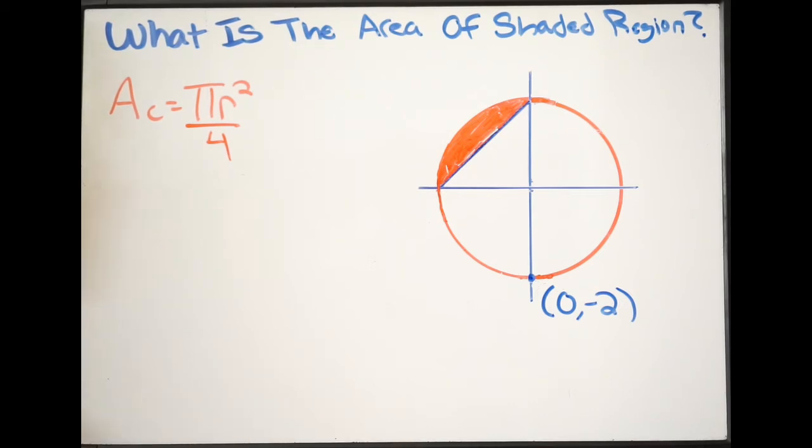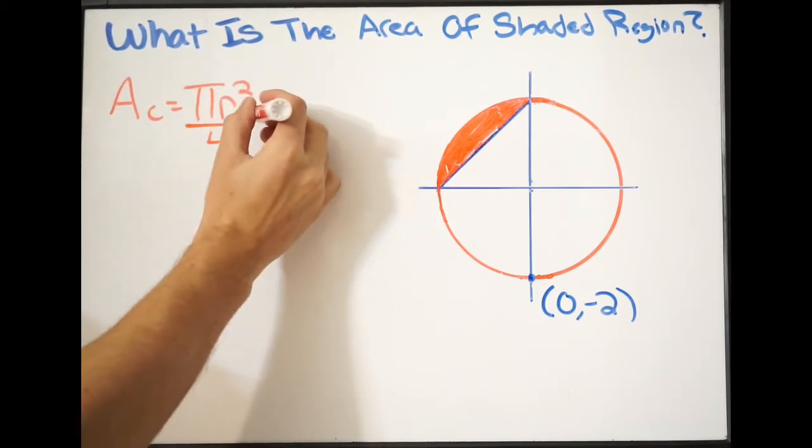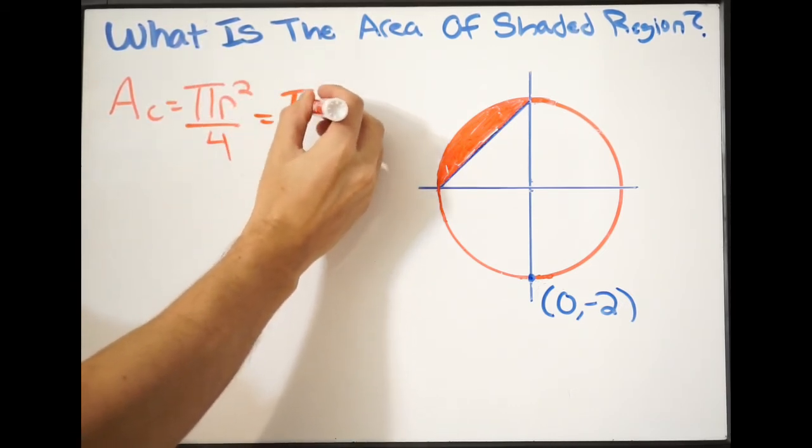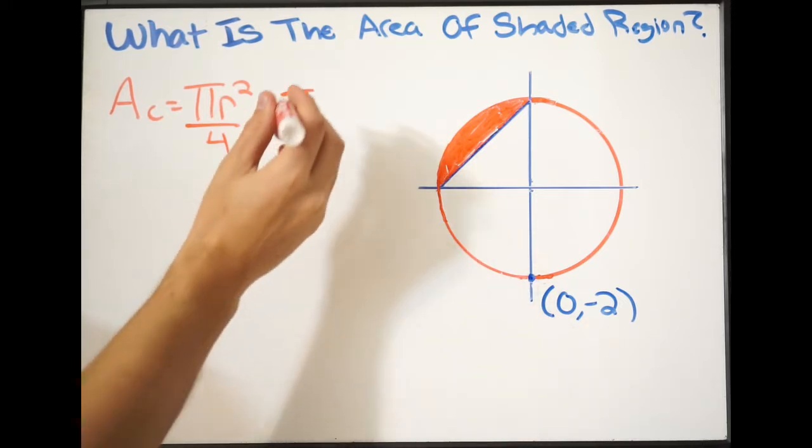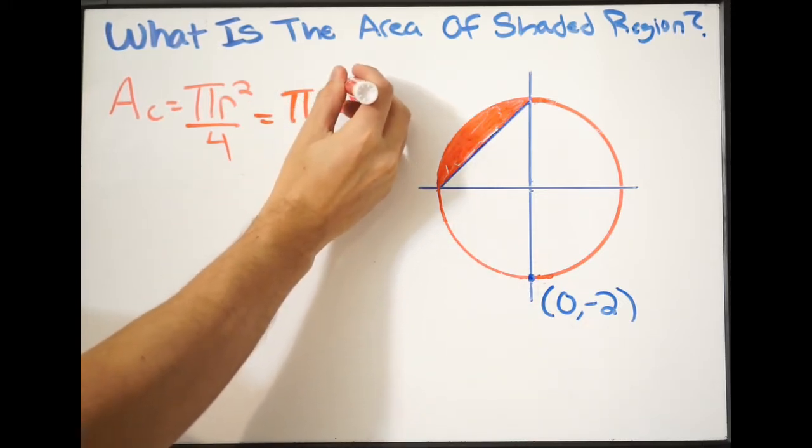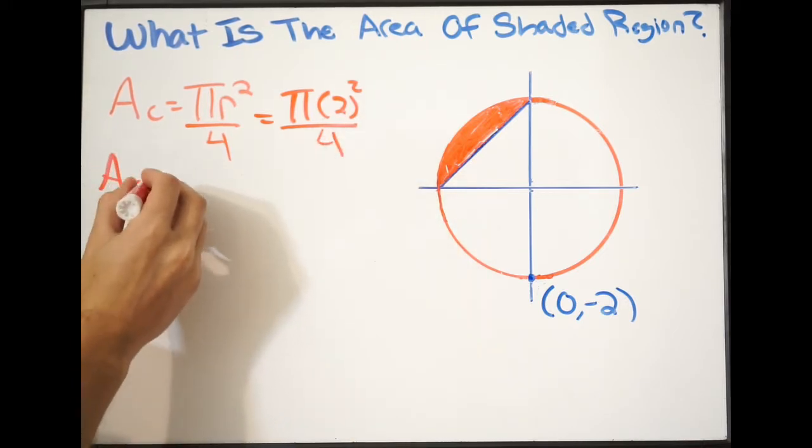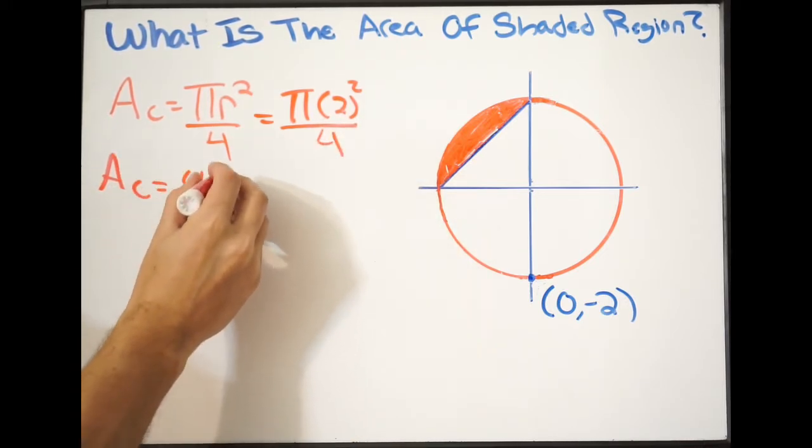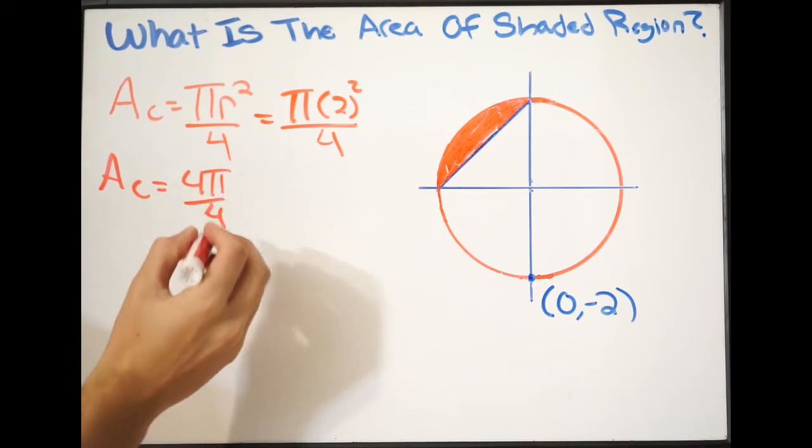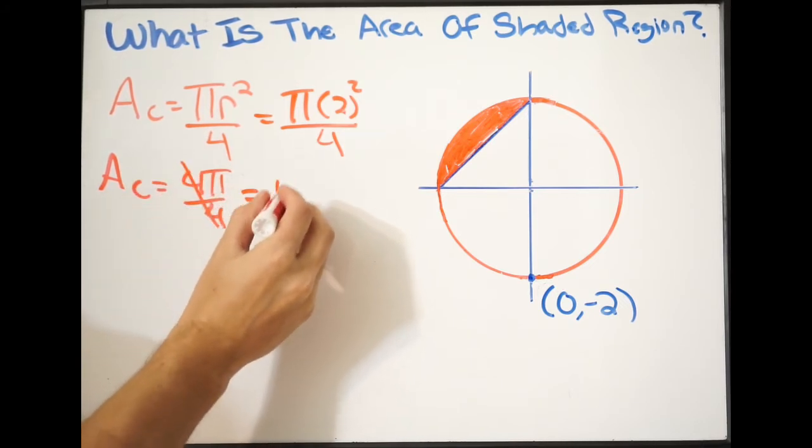And we know that our radius is going to be 2, so I'm simply going to plug this in here. So I get pi, and we know that 2 squared is going to give us 4. So we get area of circle equals 4 pi all over 4. The 4s cancel. We're just left with pi.